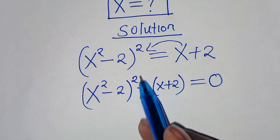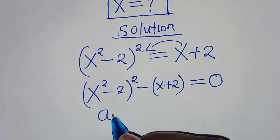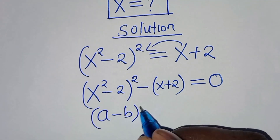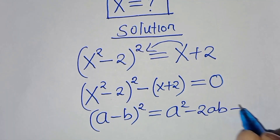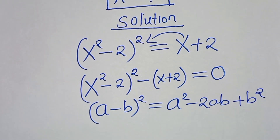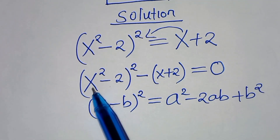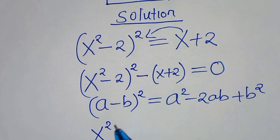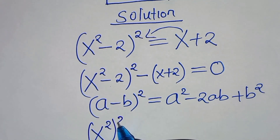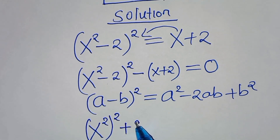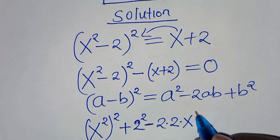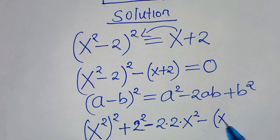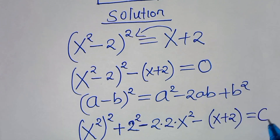So x squared minus 2, raised to power 2, is in the form of a minus b, squared, which we can express as a squared minus 2ab, then plus b squared. Applying this algebraic identity, we have x to power 2, raised to power 2, then plus 2 squared, that is 2 to the power of 2, then subtract 2 times 2 times x squared, subtract x plus 2, this is equal to 0.